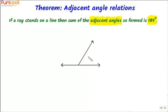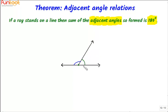Let's understand the statement with the help of the figure. If a ray stands on a line, then the sum of the adjacent angles formed is 180 degrees. The adjacent angles formed here are this angle and this angle. Their sum is 180 degrees. These angles are adjacent because they have a common vertex, a common arm, they do not overlap, and they lie in the same plane.